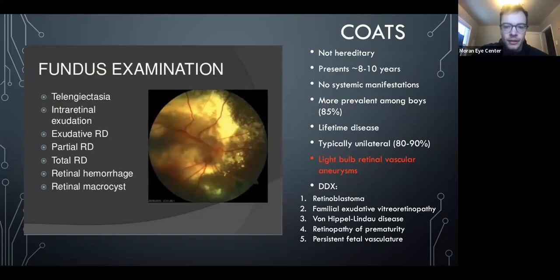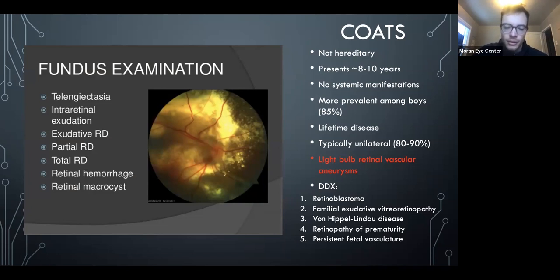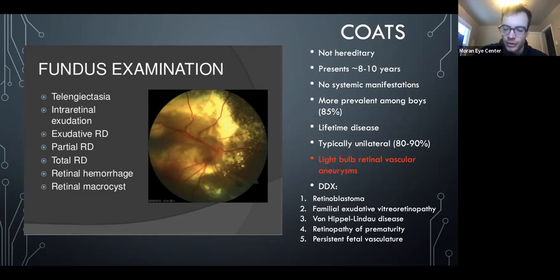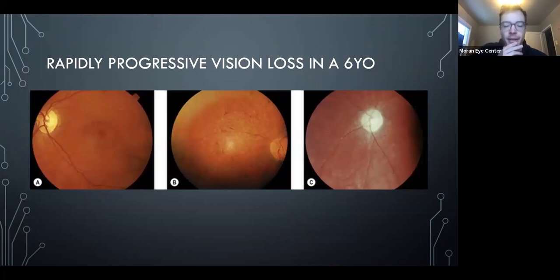Coats disease: recognize the telangiectatic vessels — the 'light bulb' vessels especially visible on FA. It's almost always unilateral and mostly in boys. Contrasting with retinoblastoma: family history and genetic testing help, but ultrasound is key — retinoblastoma will show calcification; Coats disease generally won't. The light-bulb aneurysms are the biggest buzzword for Coats.